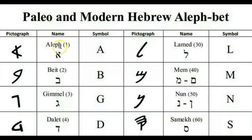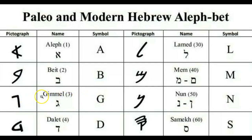Pictographically, we have the Al or Aleph, which represents the Oxhead and makes the A sound. Then we have the Bath, which makes the B sound and represents a house or being inside. We also have the Gamal, or Gimel in the Modern, which makes the G sound and represents a foot or a camel. In the Yahudiath language it's very pictographic — words mean things and each letter has a meaning.